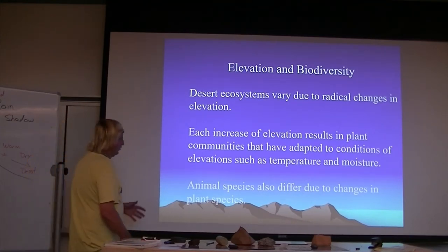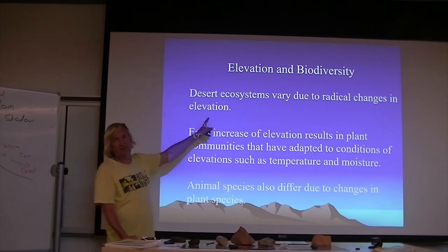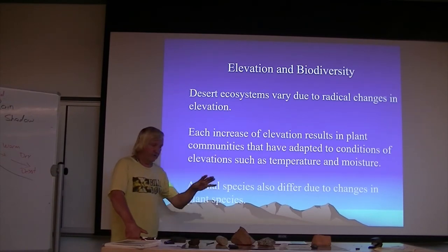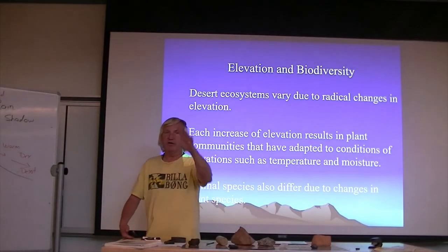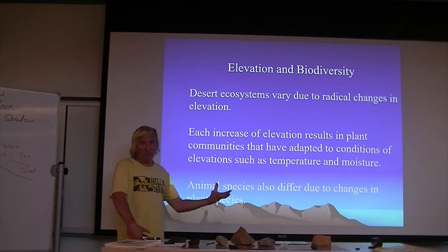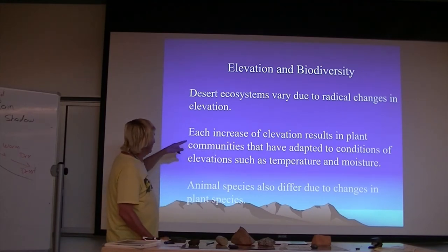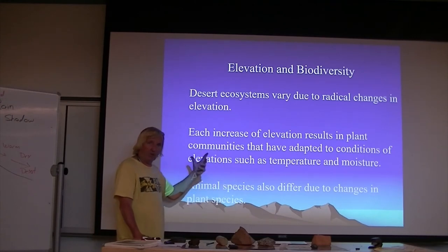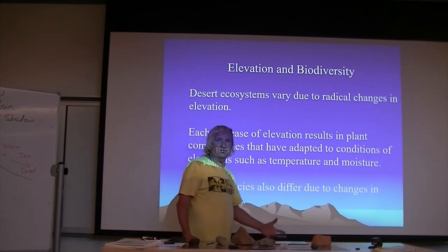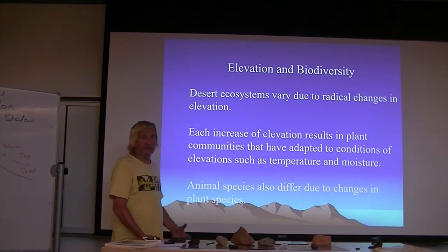Elevation is why deserts have more biodiversity than rainforests. In the southwestern U.S., the landscape cycles through basins and mountain ranges. As elevation increases, you see different plant communities, and different plants attract different animals. Deserts have more biodiversity because each elevation increase results in plant communities adapted to specific temperature and water conditions. Animal species also differ based on changes in plant species, since animals primarily adapt to plants as their food source.